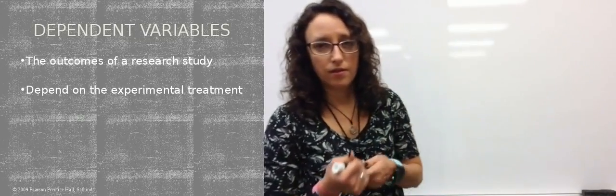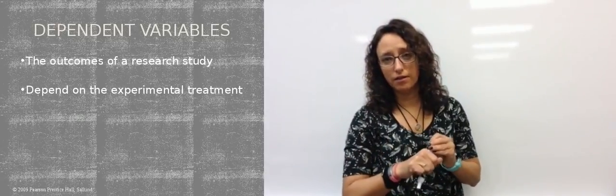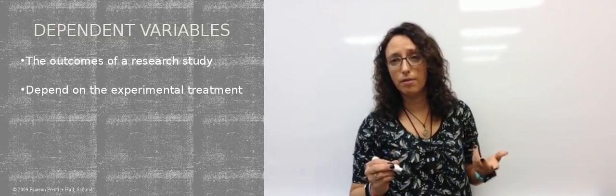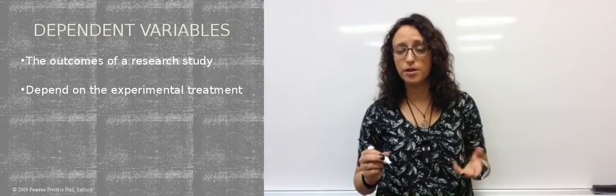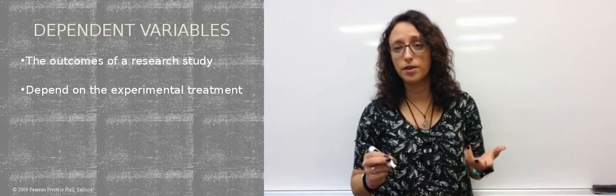So a dependent variable—this is the outcome of a research study. It's dependent on the experimental treatment. I always like to start with it first because it's usually easier to figure out than the independent variable.